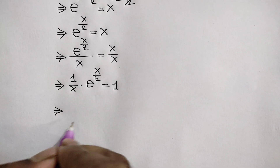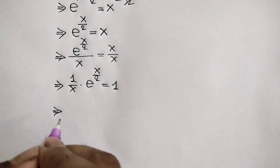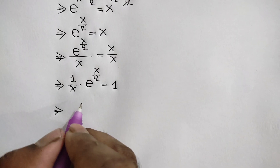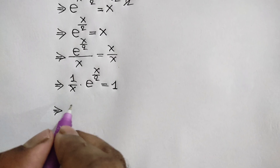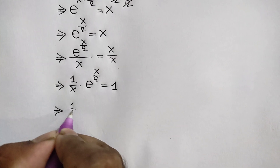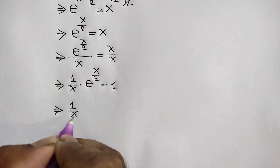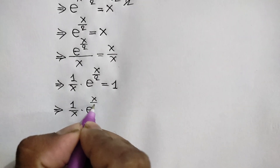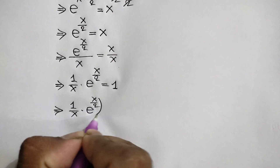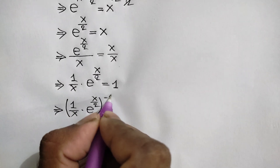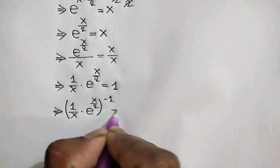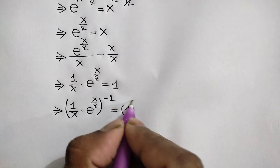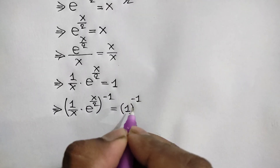Now taking power negative 1 on both sides, we can write 1 over x times e to the power x over 2, whole to the power negative 1, is equal to 1 to the power negative 1.